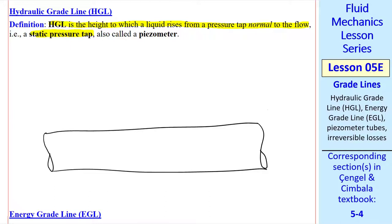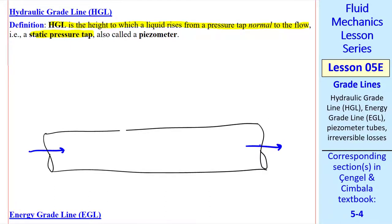Suppose we have flow through a pipe from left to right. If I drill a small hole through this pipe, and the pressure in the pipe is greater than the local atmospheric pressure, the liquid will shoot out of the hole. By the way, we're assuming we have a liquid inside this pipe. Instead we attach a hollow tube to the hole, we call that a piezometer, and the liquid will rise to some column height, depending on the pressure at this location. Since this is a static pressure tap, or a pressure tap normal to the flow, this elevation is the HGL, which we can measure relative to some arbitrary datum plane.